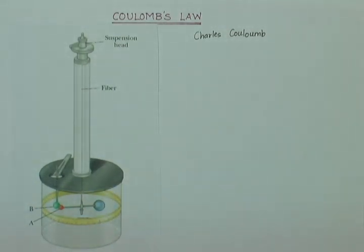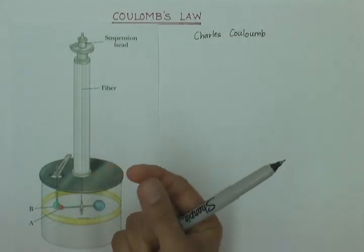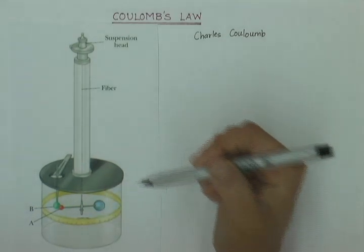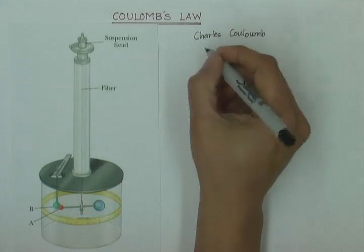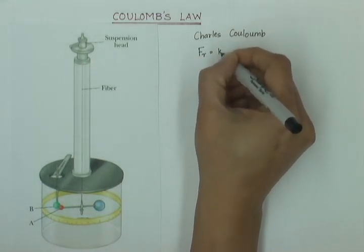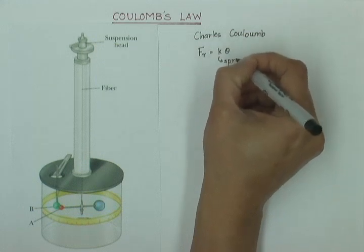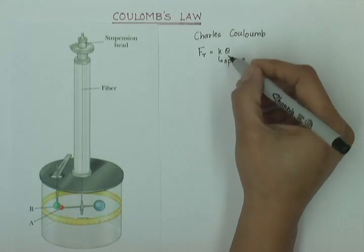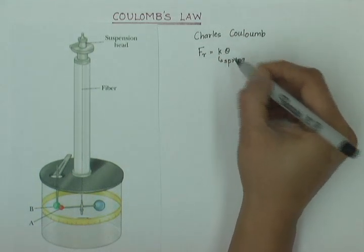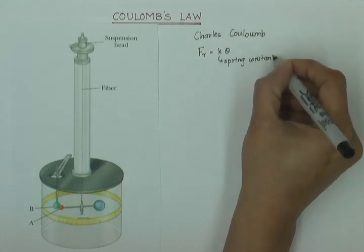What a torsion wire means is that if you twist the wire through some angle theta, a restoring force comes in the wire and that restoring force is proportional to theta. And so you can write the restoring force of the wire as K theta where K is the spring constant of the wire. And if you select a low spring constant, that means that for a very small force, you can get a very large angle of deflection.